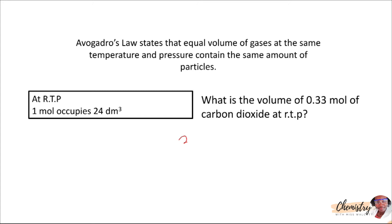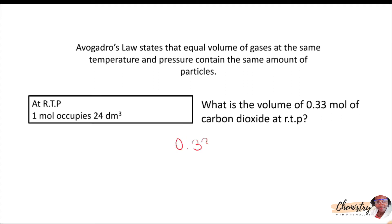If we were told to find the volume of 0.33 moles of carbon dioxide at RTP, we would simply multiply that by 24 because each mole occupies 24 dm cubed.